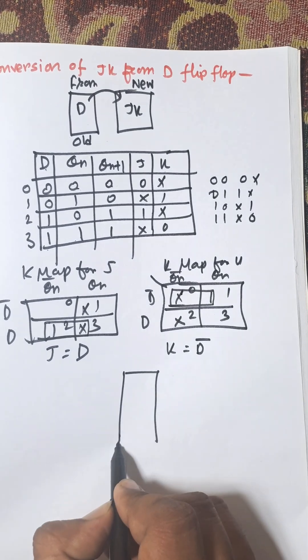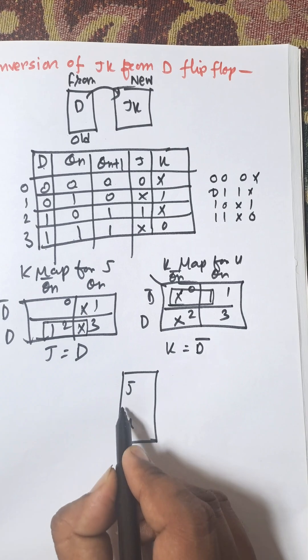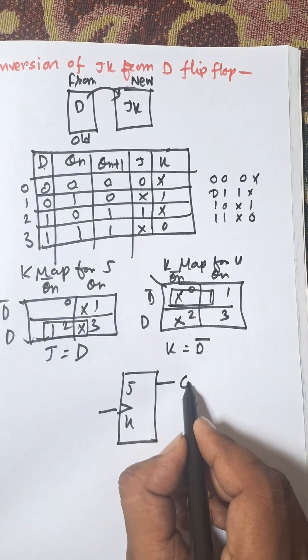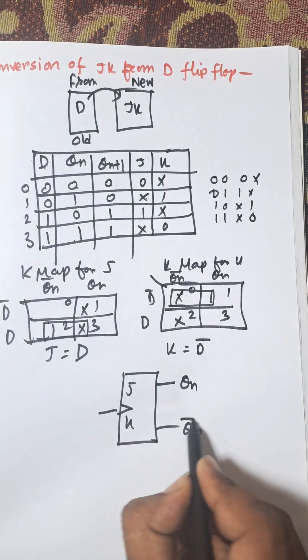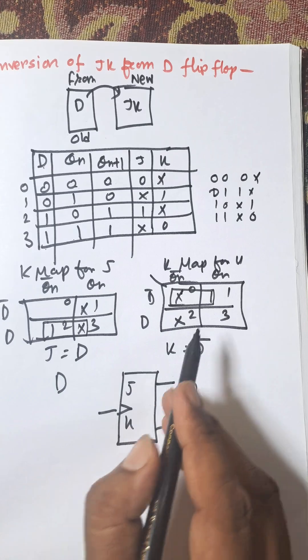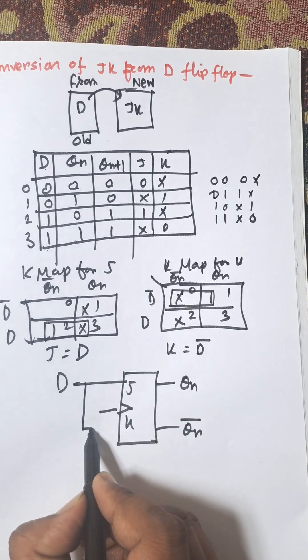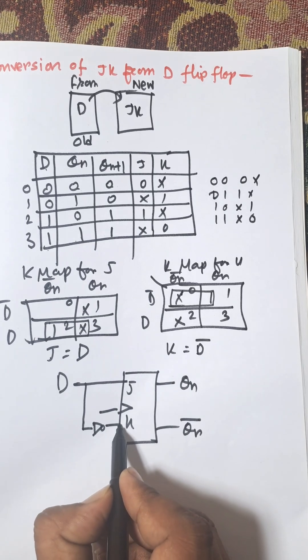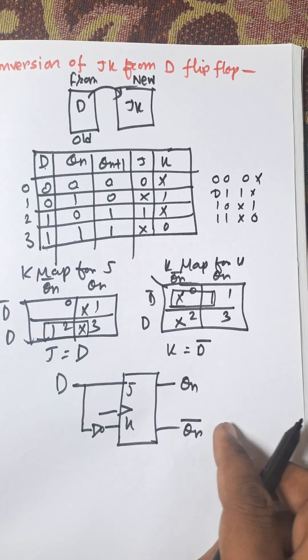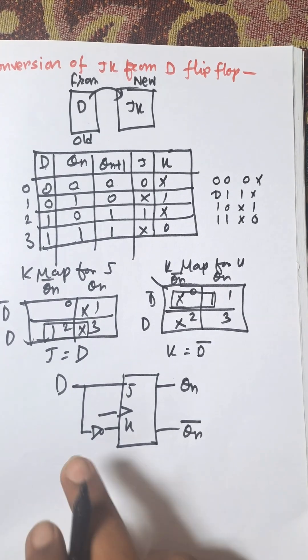And finally diagram. This is the JK flip-flop, this one is J and this one is K, this is CLK, this one is output Qn and Qn bar, and D, this is the D. D directly connected to J and K equal to D bar and we need NOT gate which point to K. So this is the concept of JK flip-flop from D flip-flop.